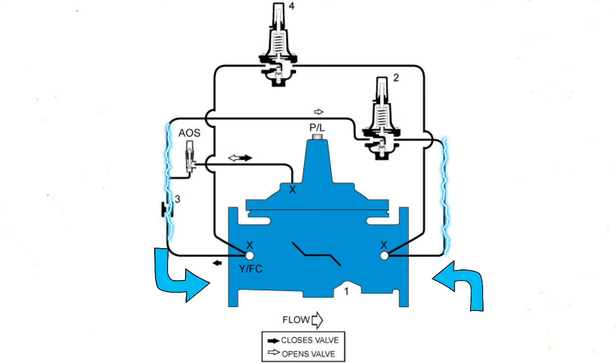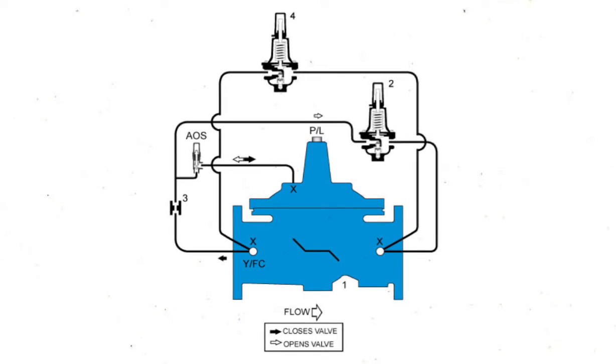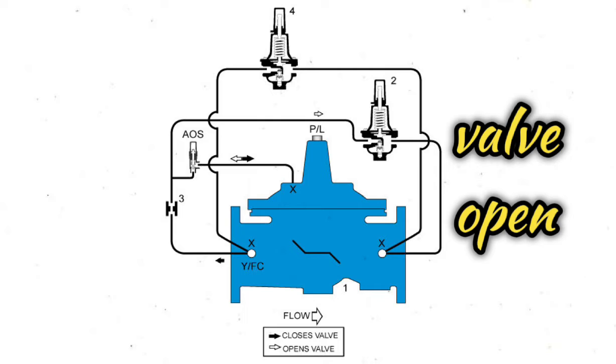When pressure on both sides of the main valve piston is equal, a spring located on the top of the piston acts as a differential force and closes the main valve piston. As pressure against the bottom of the piston increases and exceeds the pressure exerted against the top of the piston plus the force of the spring, the spring tension is overcome and the valve opens.